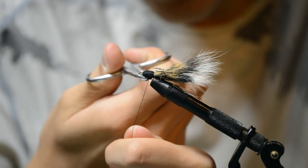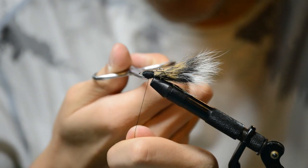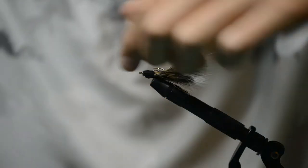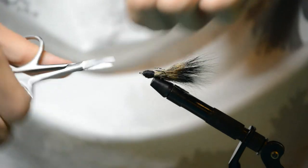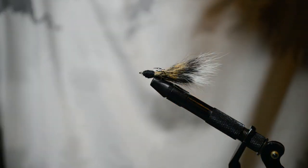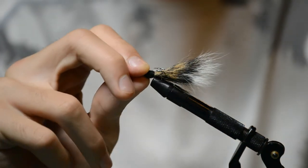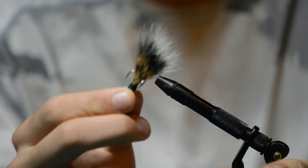Now you're gonna cut your excess thread. Now what you can do is cut the hair that's left there sticking out past the eyelet. So then there you go, you have your squirrel tail trailer, but we're not done yet.